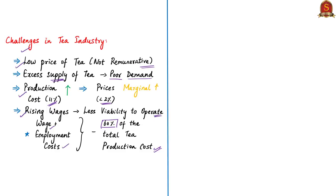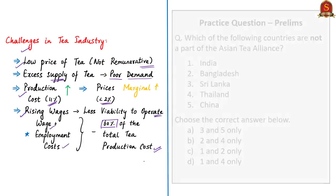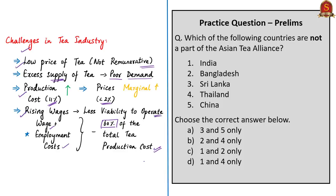All these challenges can be managed only if market demand is created. The Asian Tea Alliance is one such initiative by the major tea-producing countries of Asia. With this, we come to the end of this topic, and the displayed prelims question will be discussed in the last session.